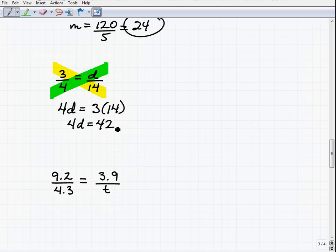So this is 42. 4d equals 42, and 42 divided by 4 is 10.5. So d equals 10.5.